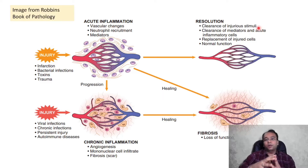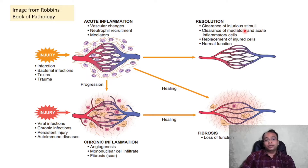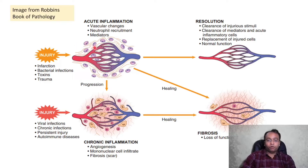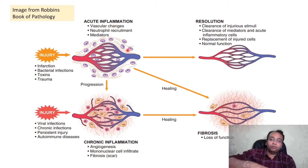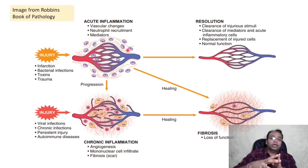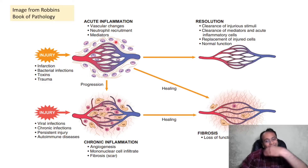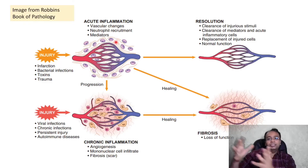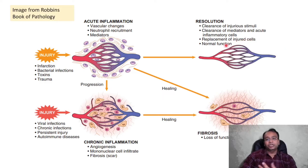Resolution means clearance of the injurious stimuli. There will be complete restoration of normal tissue and normal architecture. There will be clearance of mediators and acute inflammatory cells. Once the function of neutrophils is over, they will be removed by apoptosis. The fluid exuded due to increased vascular permeability will be cleared by lymphatics. That is resolution — the ideal outcome.